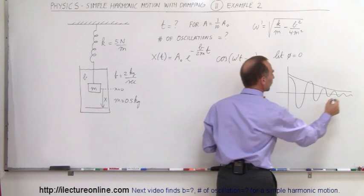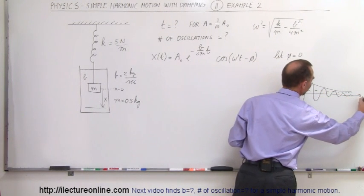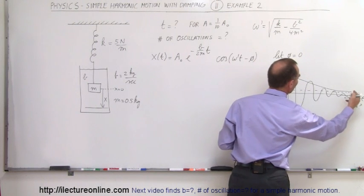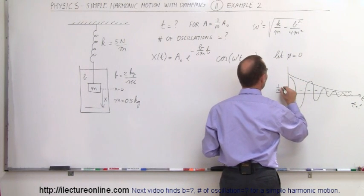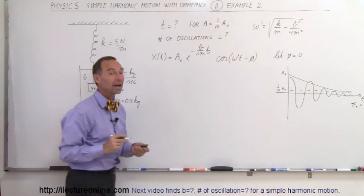And we want to know at what point, how long will it take in time, because the horizontal axis is time, how long will it take, t is equal to question mark, to go to 1 tenth the original amplitude, if this is the original amplitude right there. Okay, how do we do that?